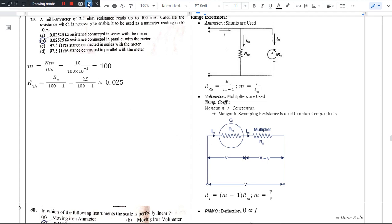Hello there, notes description on the 29th question. A milliammeter of 2.5 ohm resistance reads up to 100 milliamperes. Calculate the resistance which is necessary to enable it to be used as an ammeter reading up to 10 amperes.